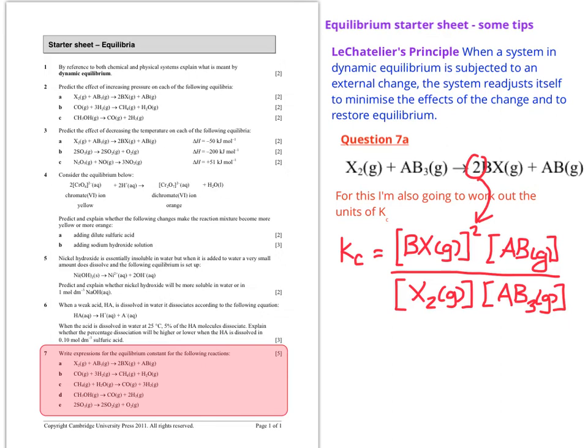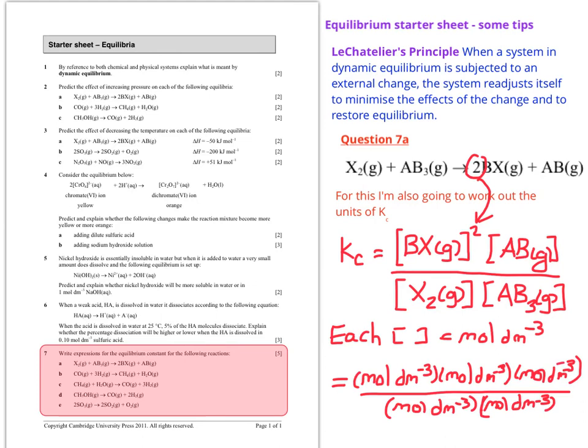What I now have to do is work out the units. Each square bracket is moles per decimeter to the minus 3. If I take BX squared that's actually 2 concentration terms because it's BX times BX. That means it gets 2 moles per decimeter cubed expressions. I've just highlighted them there so you can see why there's 3 on the top and 2 on the bottom in my units calculation.